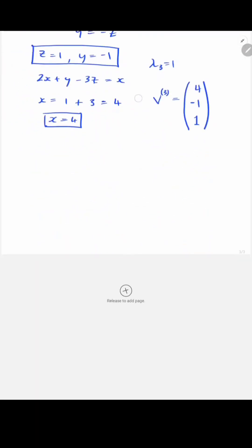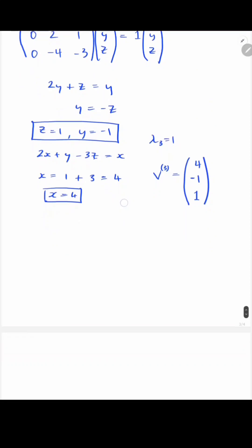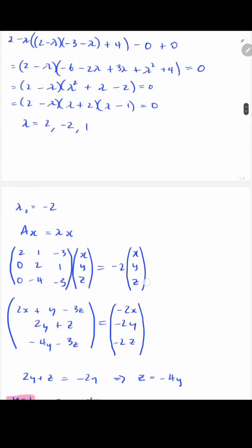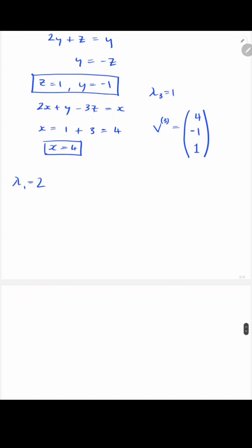And we'll do the same for the last one, which is lambda 1. I don't know why I've done it in this strange order. I think it's 2. I'm just going to double check. Yep. So lambda 2 is, lambda 1 is 2. And we have that same equation again.